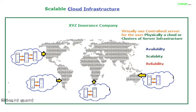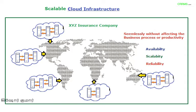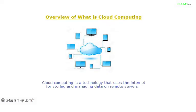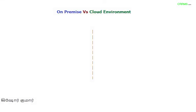When we talk about scalable cloud infrastructure, if there is a need for capacity improvement at a location, you can seamlessly add one server to that cluster without affecting the production process. Wherever you need, you can add a cluster, a server, or even a new data center — all seamlessly without affecting production. In short, cloud computing is a technology that uses the internet for storing and managing data on remote servers.